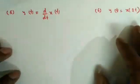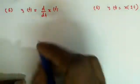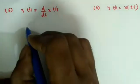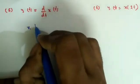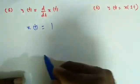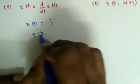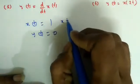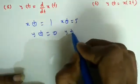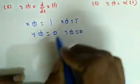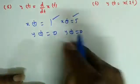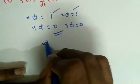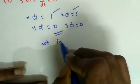Next question: y(t) = d/dt[x(t)]. When differentiation is involved, consider: if x(t) = 1 (constant), then y(t) = 0. If x(t) = 5 (another constant), then y(t) = 0 again. Two different inputs give the same output, so this system is NOT invertible.